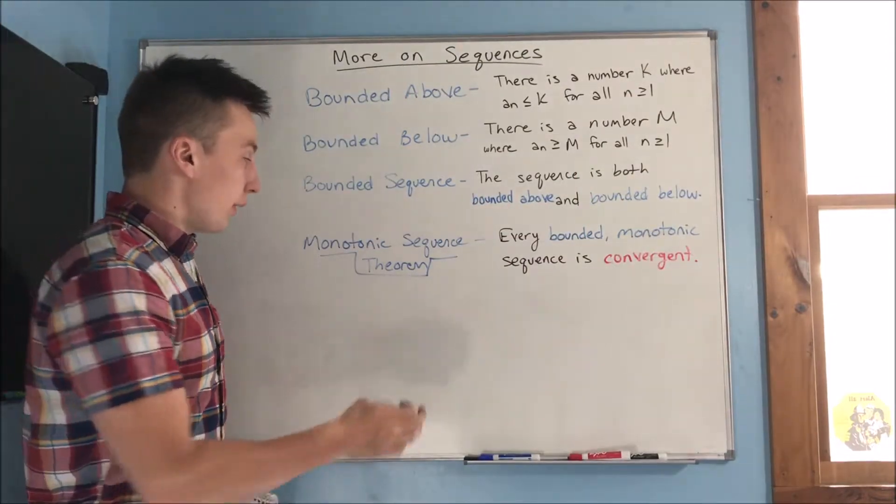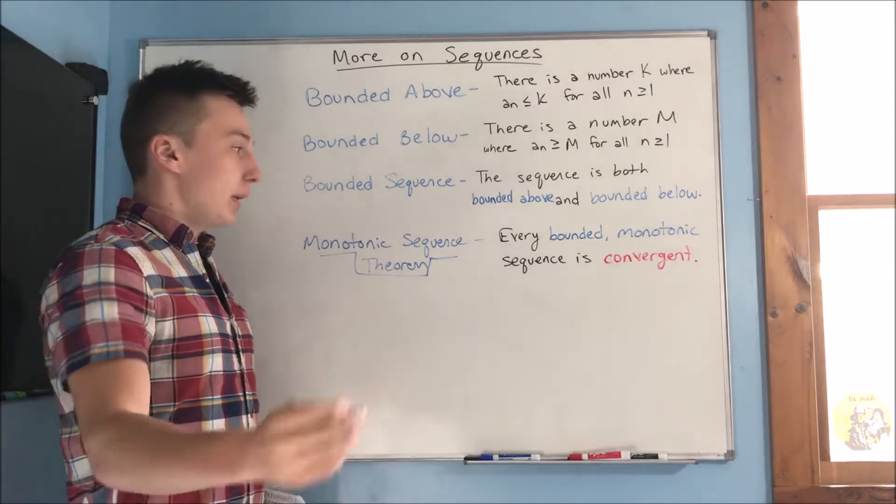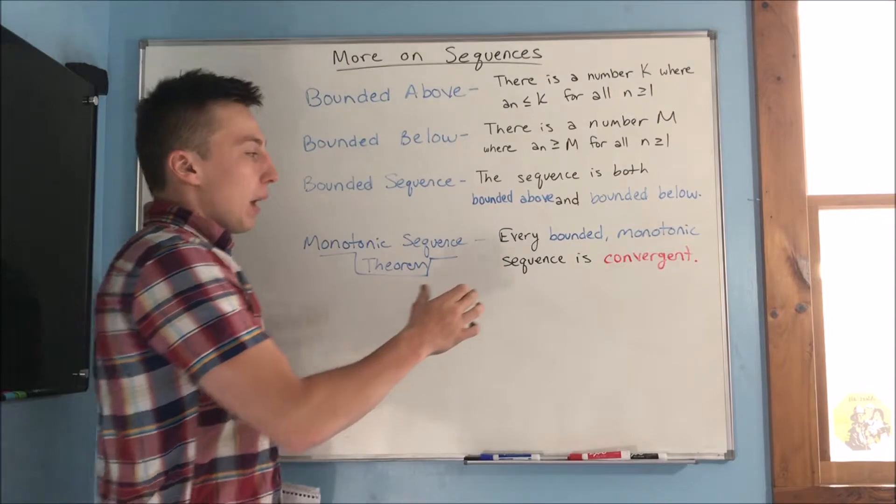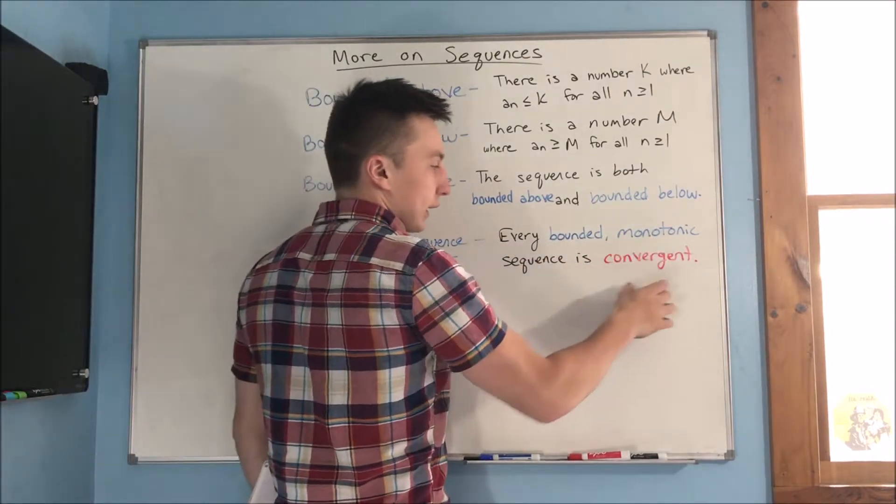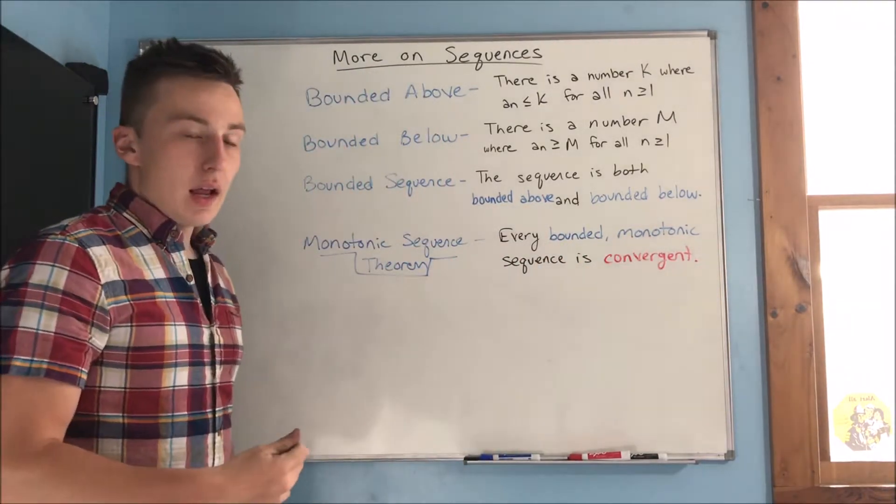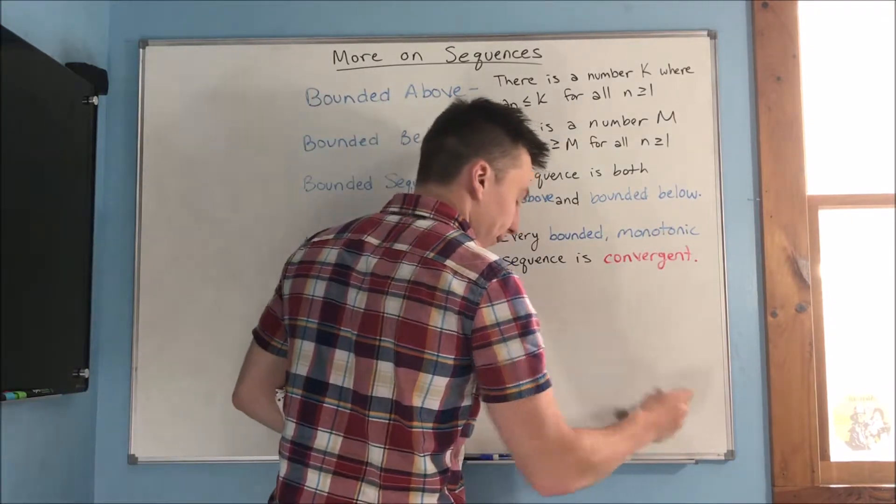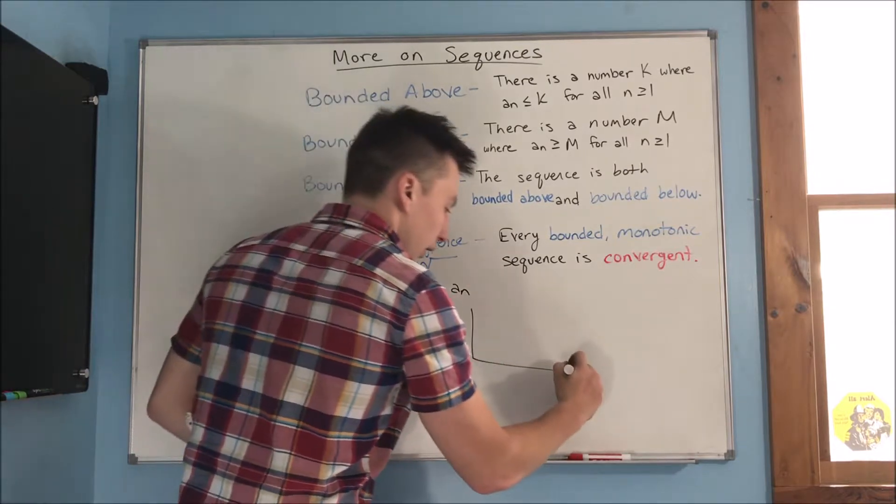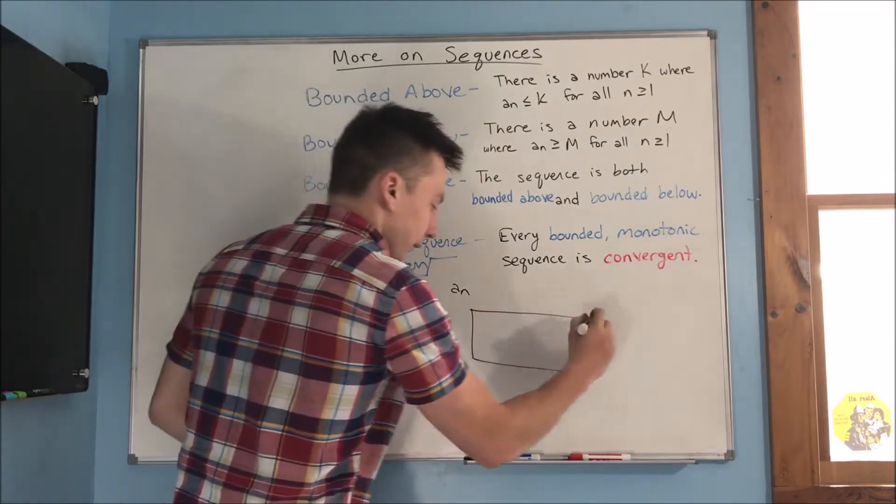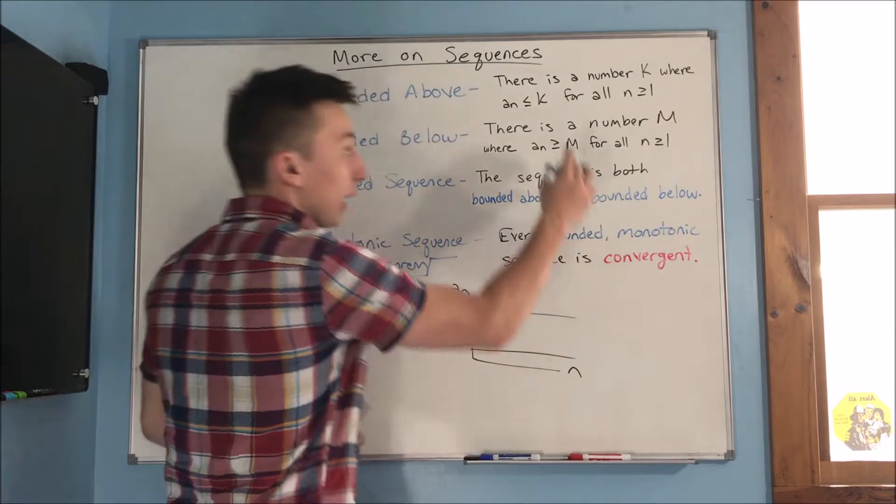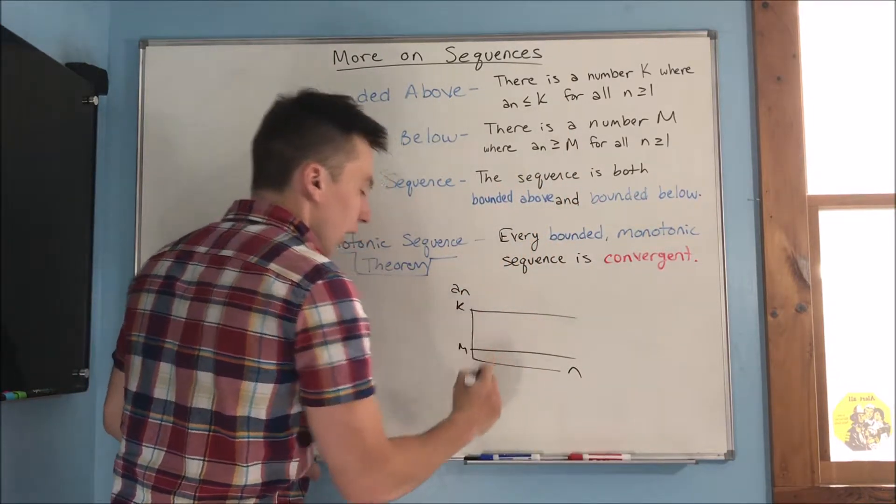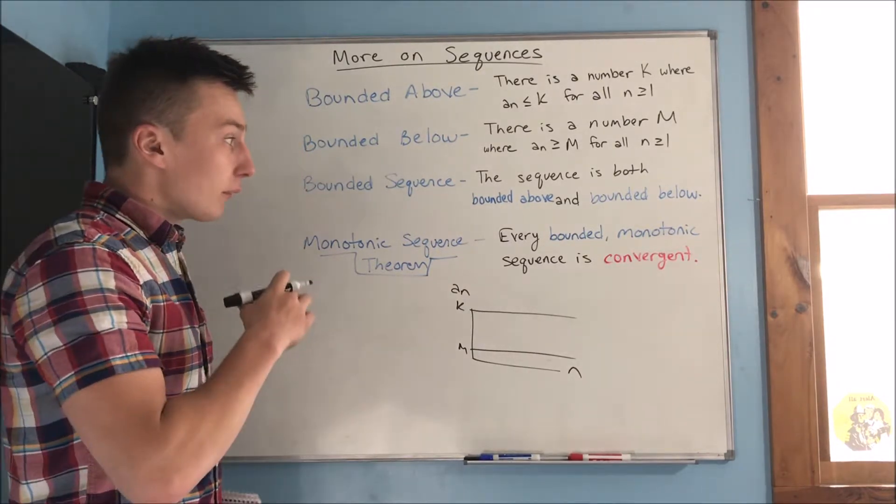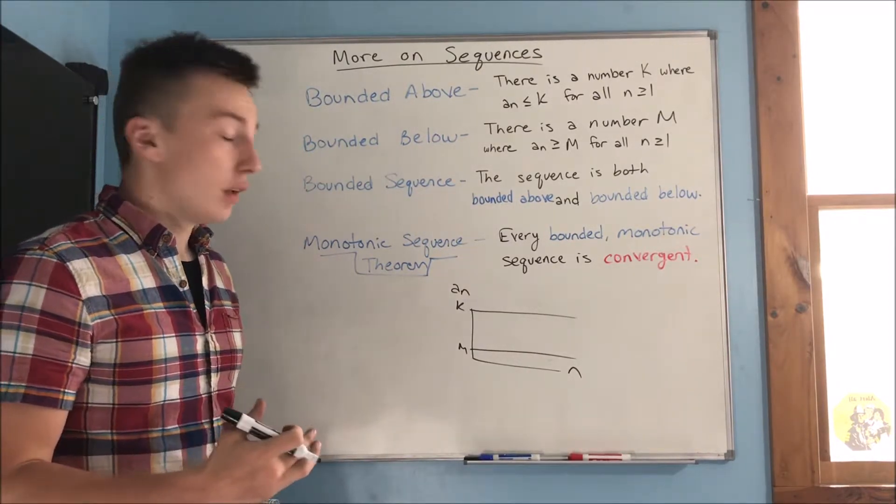Lastly, we need to go over the monotonic sequence theorem. This may be important for a couple problems that you might get on a test. Every bounded monotonic sequence is convergent. And what that means is that you have a sequence that is bounded above and below. So, let's say we have, let's bring back our k and our m. And it's monotonic, which means it's going to just be permanently increasing or decreasing.